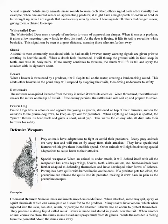Prey animals have adaptations to fight or avoid their predators. Many are very fast and will run or fly away from their attacker, using specialized features which give them incredible speed. Other animals will fight back using special adaptations — arms, legs, wings, hooves, teeth, claws, antlers, and more. Some animals have further adapted, like porcupines, which have quills with barbed hooks on the ends. If a predator gets too close, the porcupine can release the quills into its predator, making it draw back in pain as the porcupine escapes.